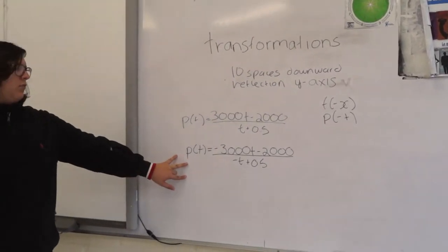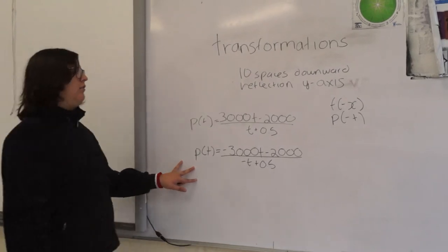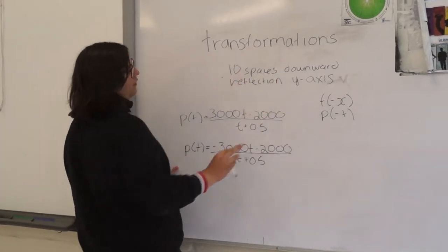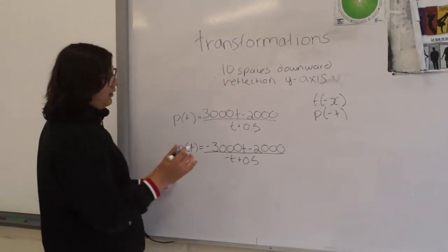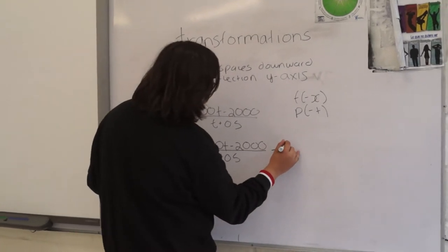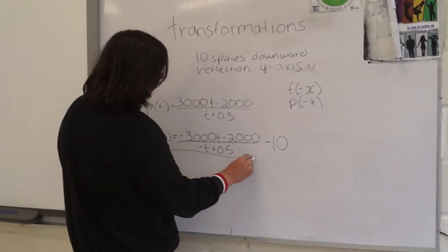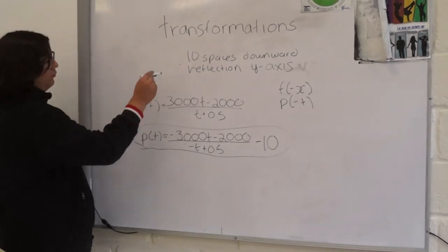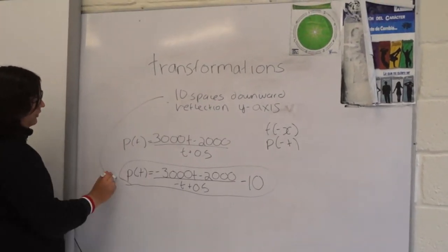Now, having this equation, we are going to make the transformation, 10 spaces downward. So we are going to add minus 10 as the vertical shift, and here we have the new equation with both transformations.